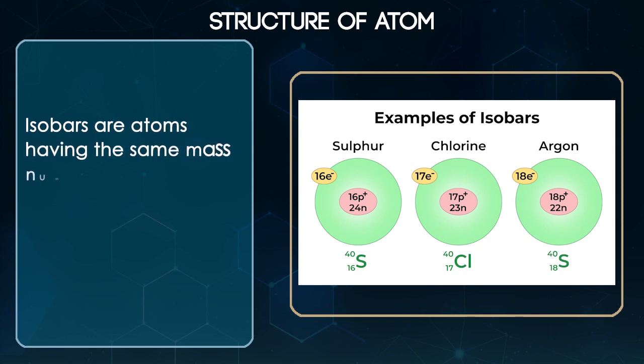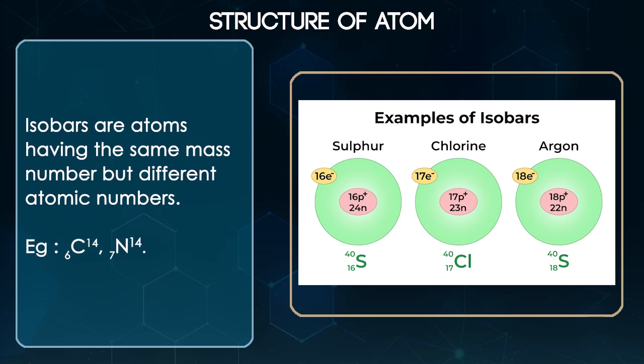Isobars are atoms having the same mass number but different atomic numbers. For example: 6C14, 7N14.